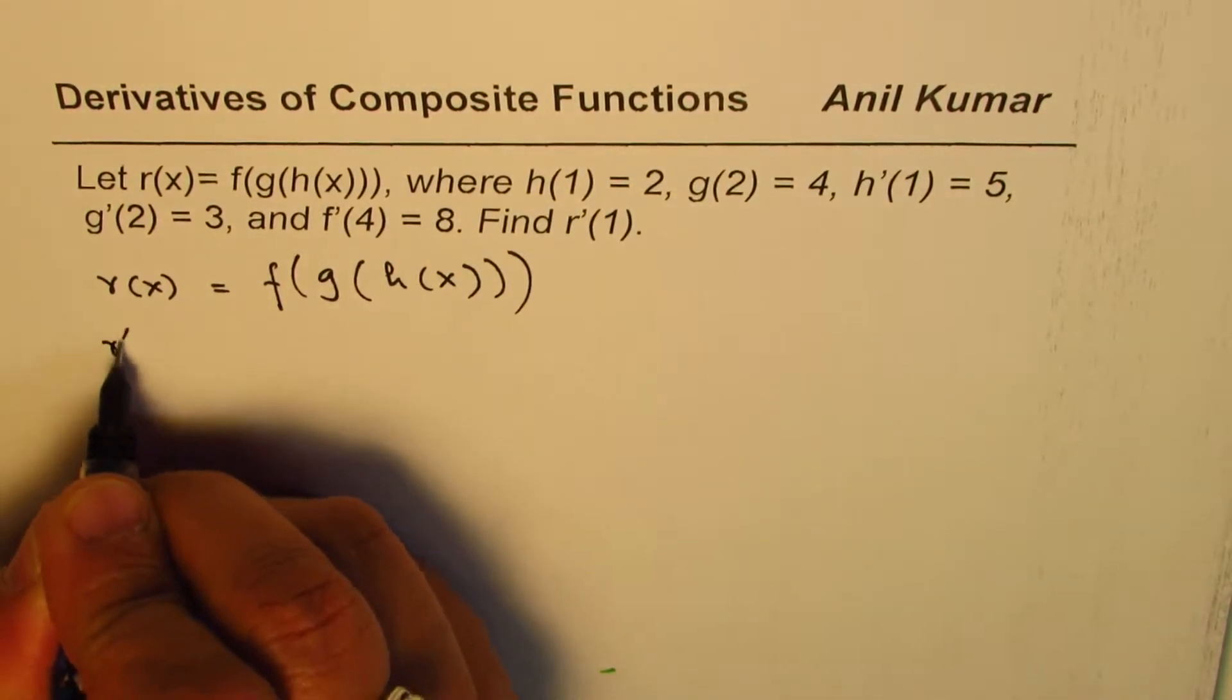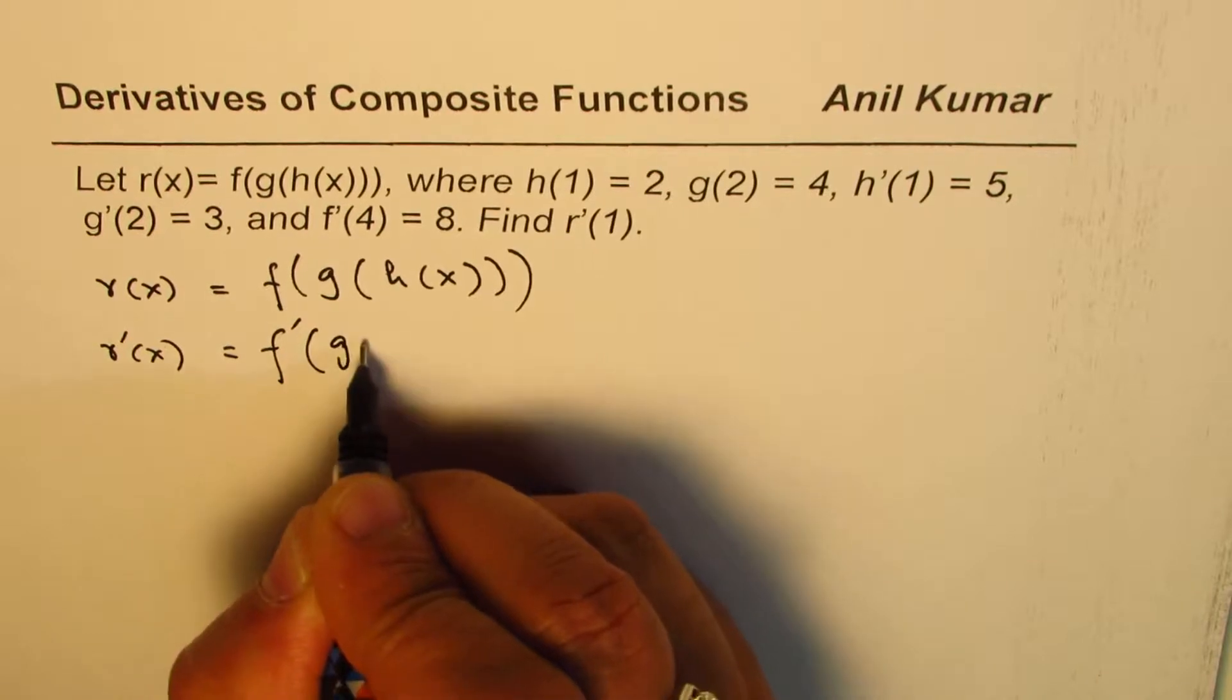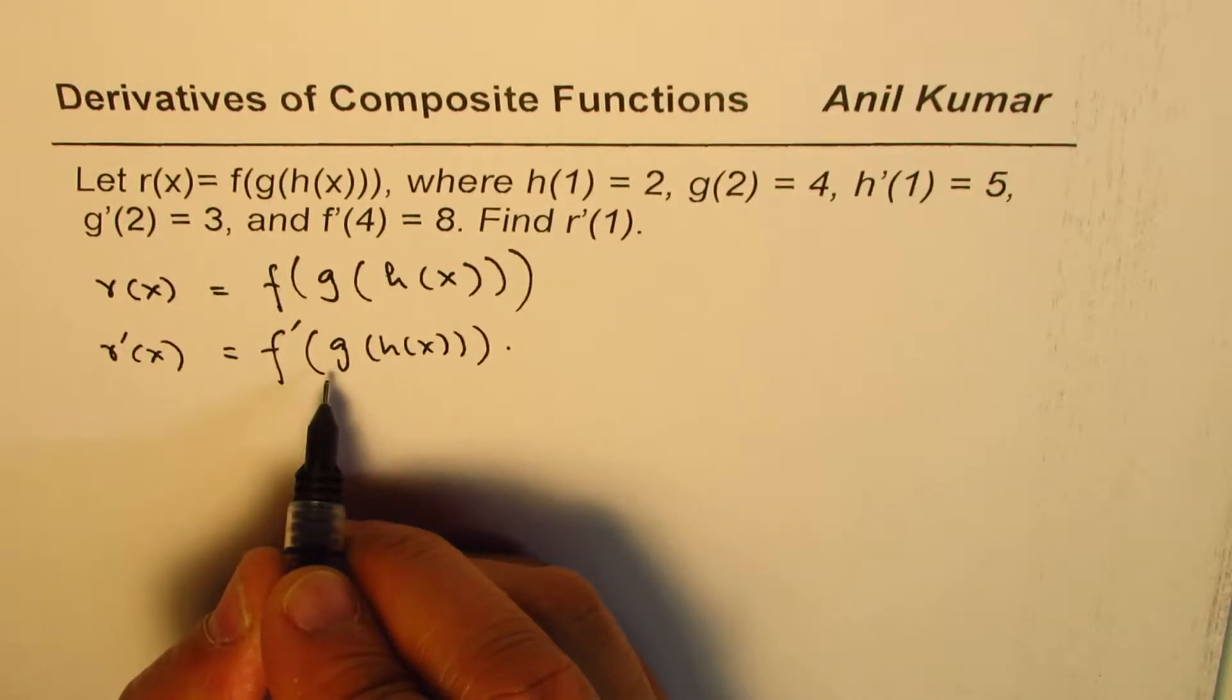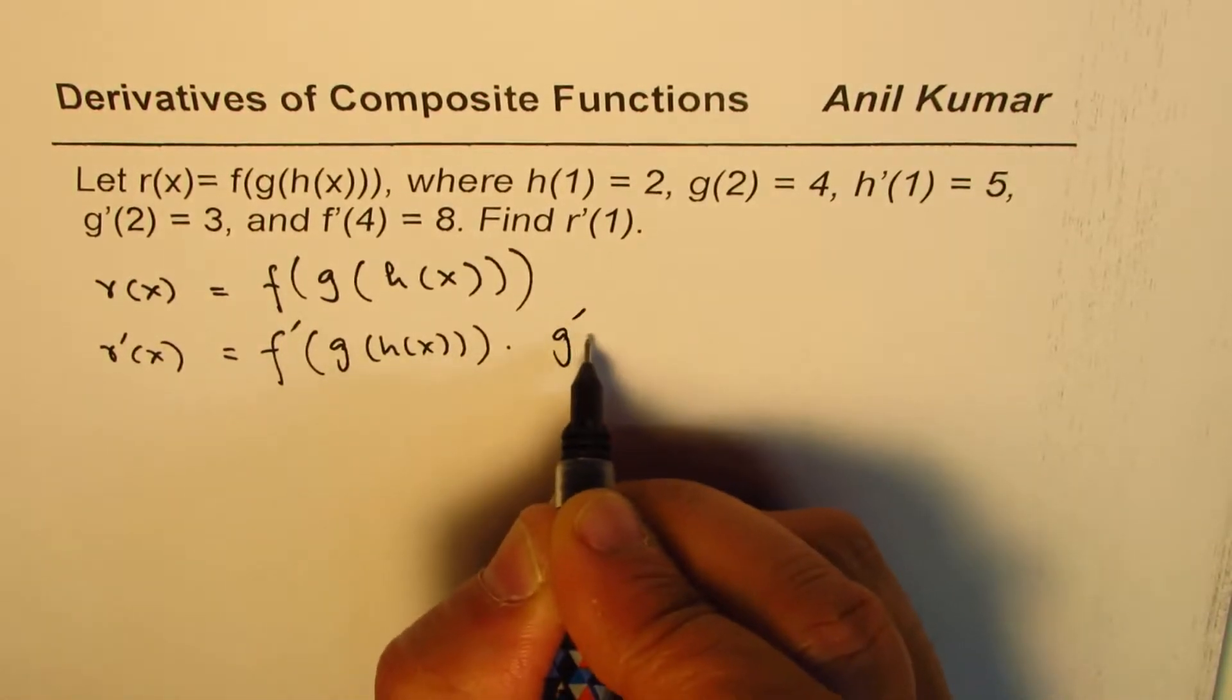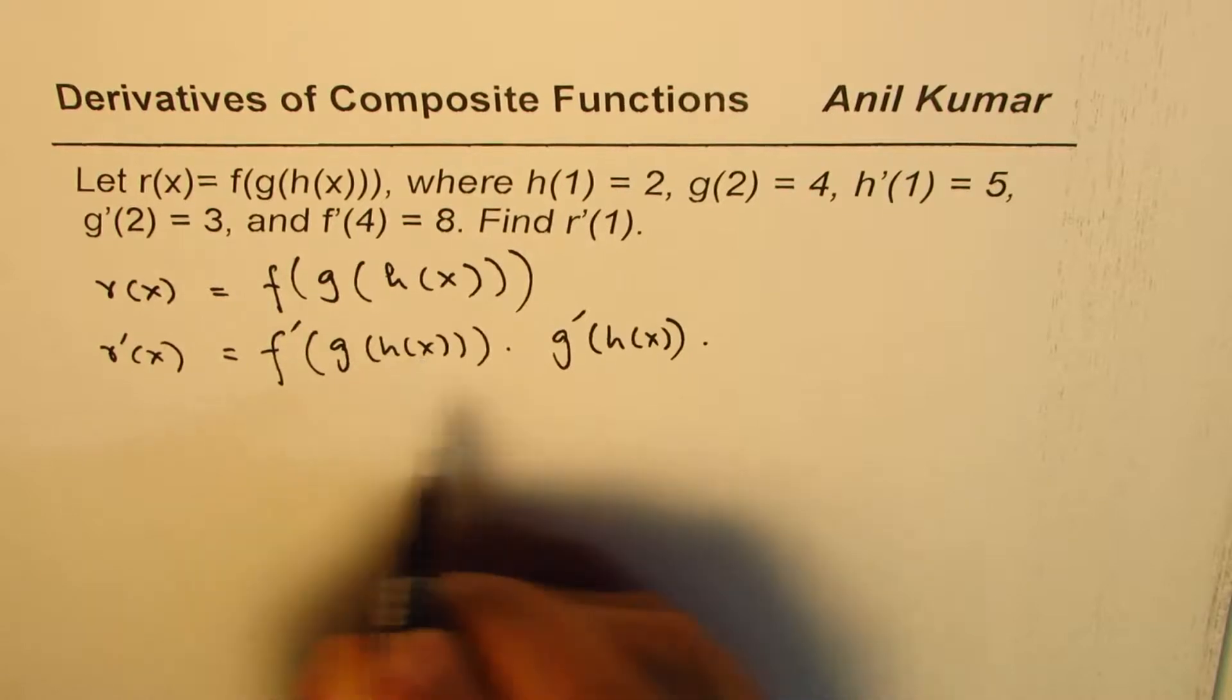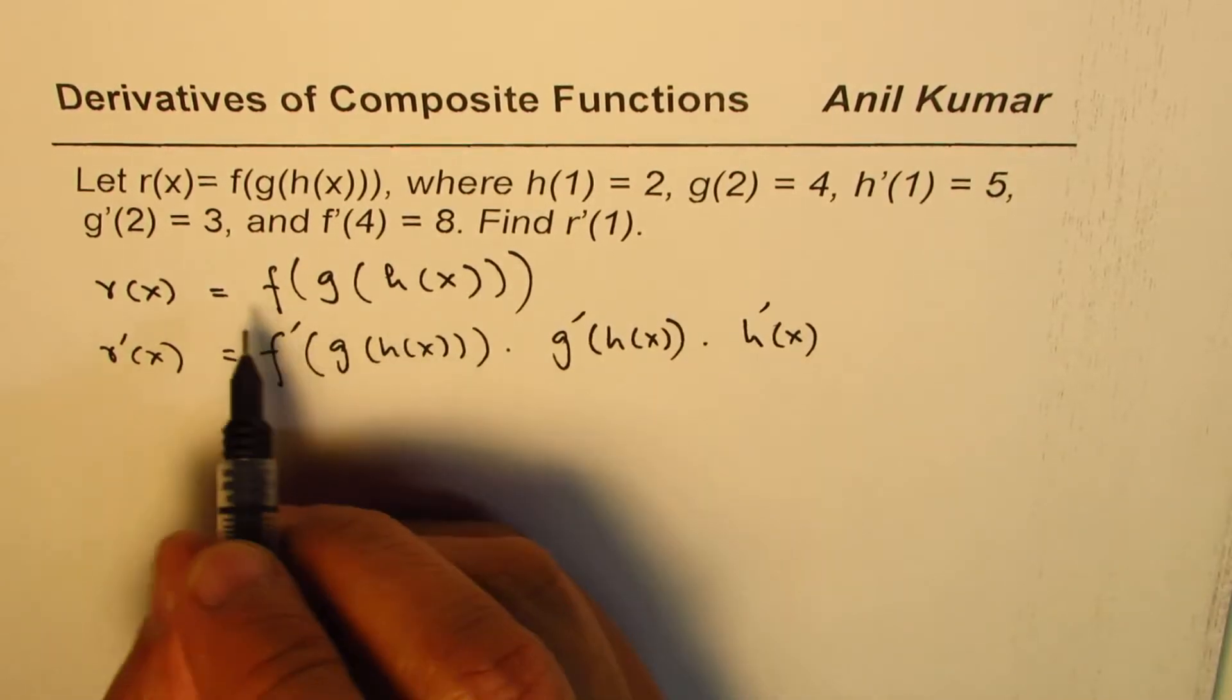Now the derivative of this function is f'(g(h(x))) times the derivative of the inside function, which will be g'(h(x)), times the derivative of the inside function, which is h'(x). Do you see that? So that is how we get the derivative of a composite function.